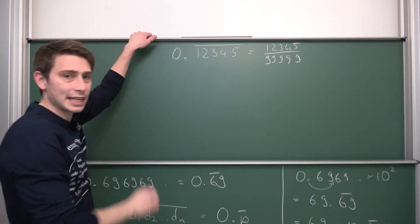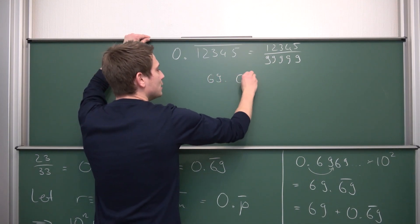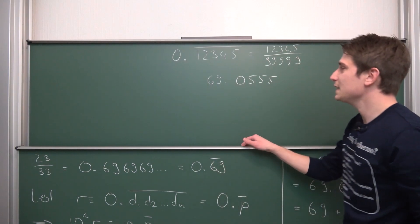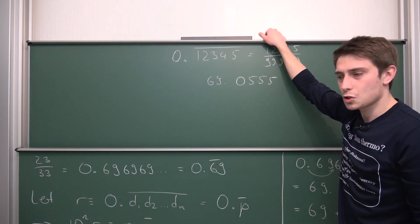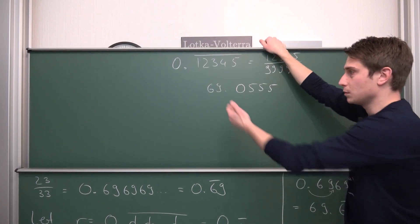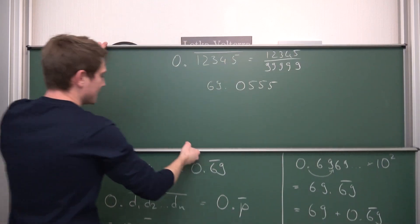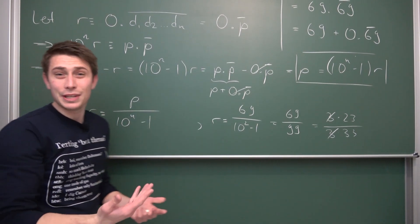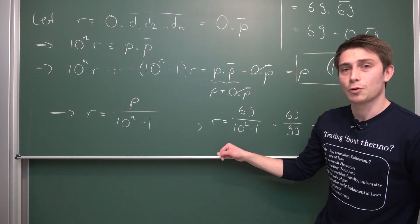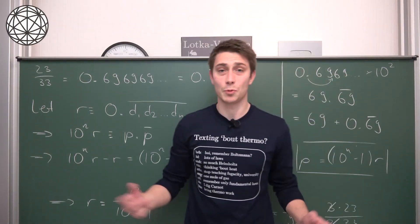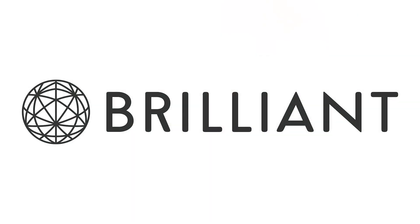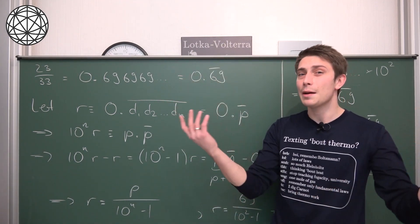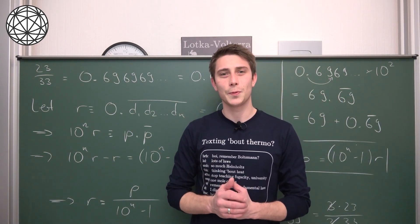Next time we'll handle numbers that look like 69.0555... with a 5 repeating — those need to be handled slightly differently algebraically, but it's not a big deal. Also, this proof gives us a very nice result: all repeating decimals, regardless of form, are actually rational numbers, because they are of the form integer over integer by definition.